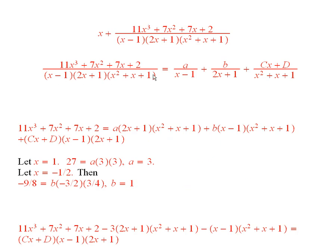Now multiply both sides by the denominator and you get this here. Now this is something where we have to find what a and b and c and d are.